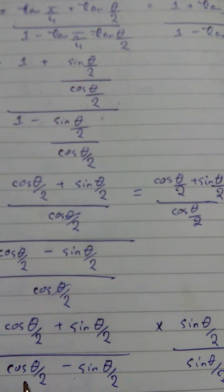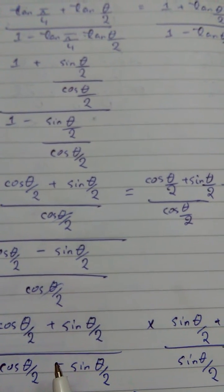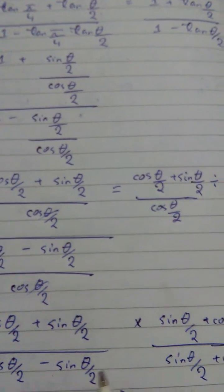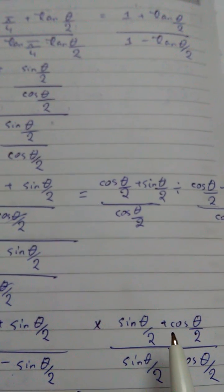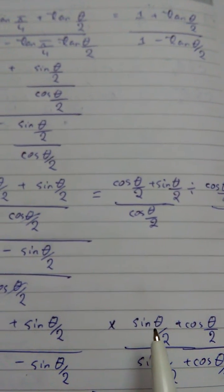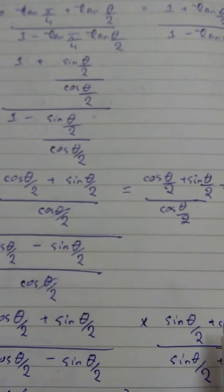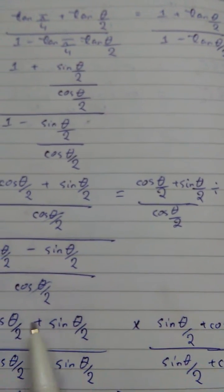Okay, so the conjugate is going to be just nothing but a change sign in the mid, which is positive. Once you take the conjugate, you just simplify further by direct multiplication from numerator to numerator and denominator to the denominator, and you got this thing.